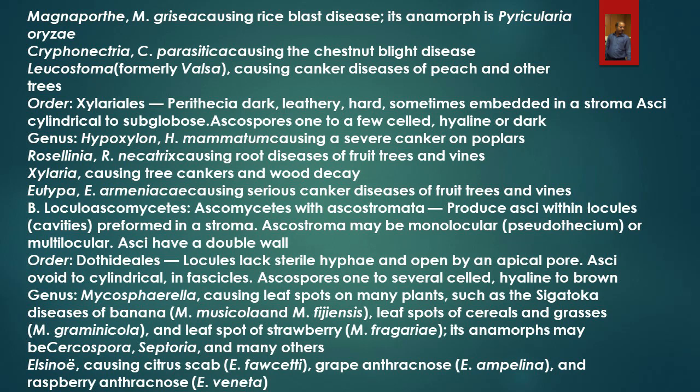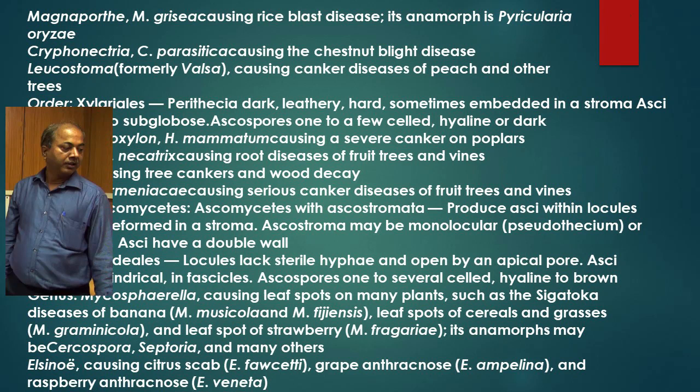Then Elsinoe causes citrus scab, then grape anthracnose by Elsinoe ampelina, and raspberry anthracnose by Elsinoe veneta. These are the diseases that come under the pathogen Elsinoe.